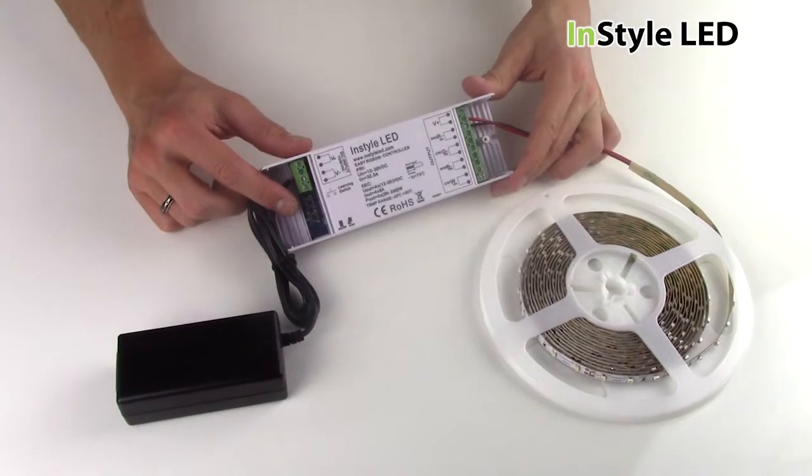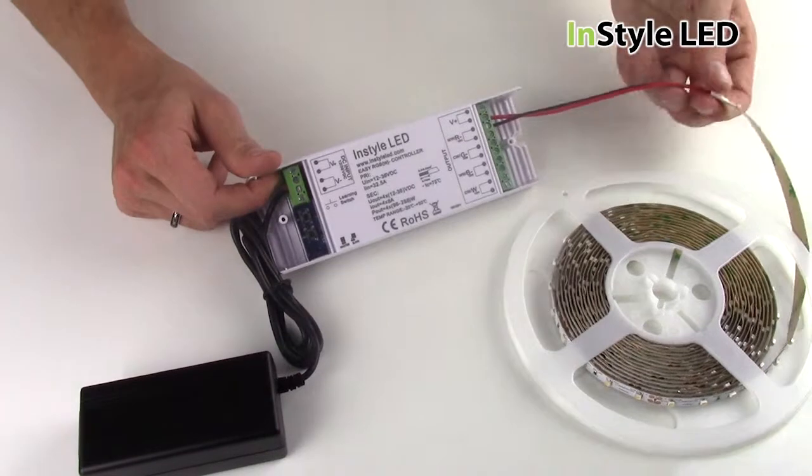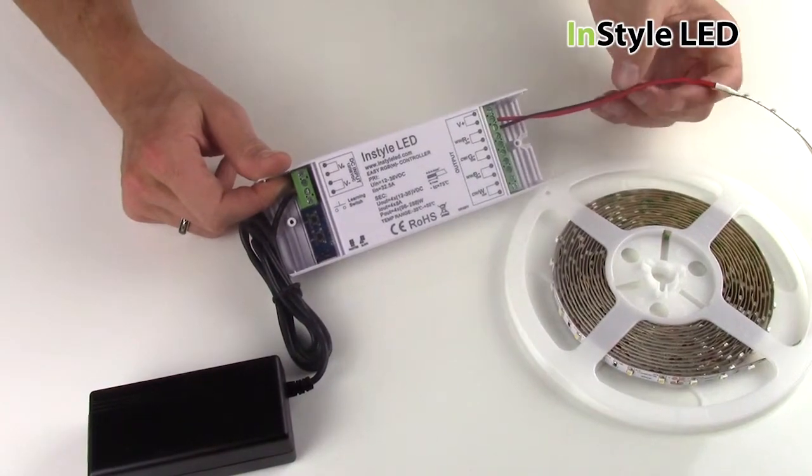You can extend the 2 core cable as much as you require using a connector block, allowing you to have the transformer and multi receiver a good distance away from the LED tape.